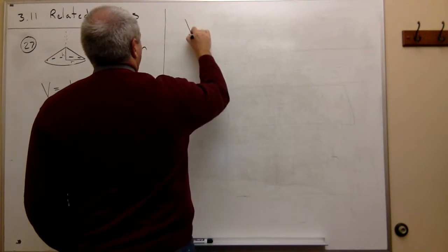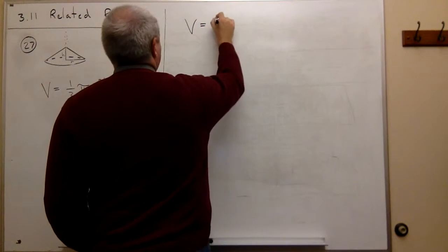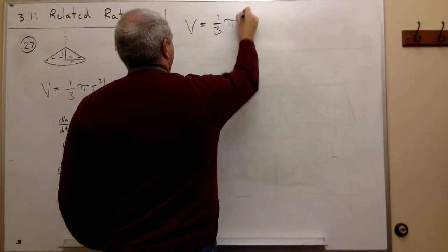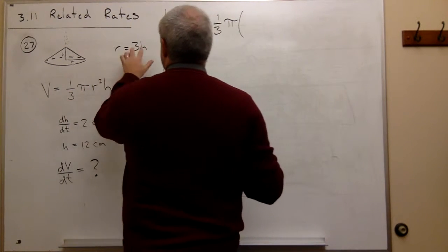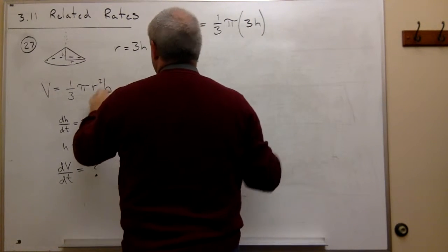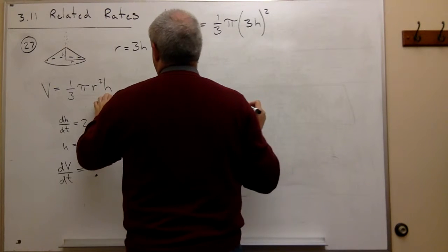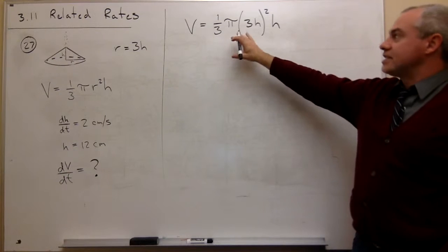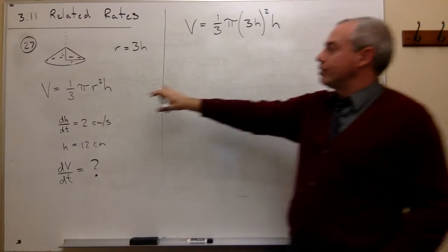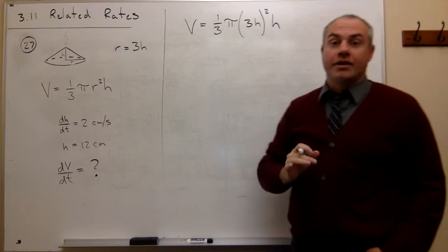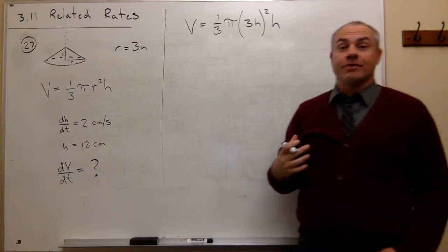do that. We get that volume is equal to one third pi times r, but now we know that r is three times h, so I'll put a three h in, squared times h. Okay, so this is the exact same equation for volume that we had before, we just replaced r with three h. All right, let's simplify that